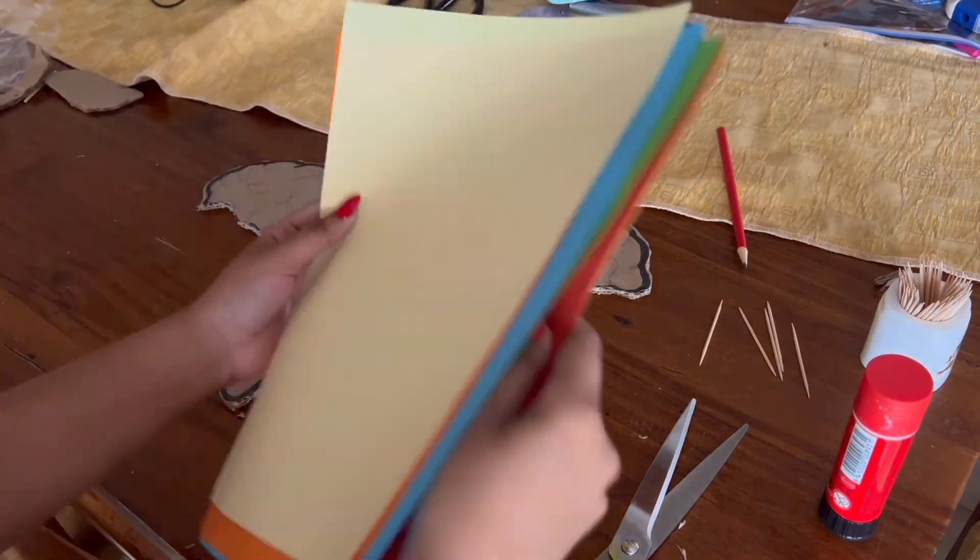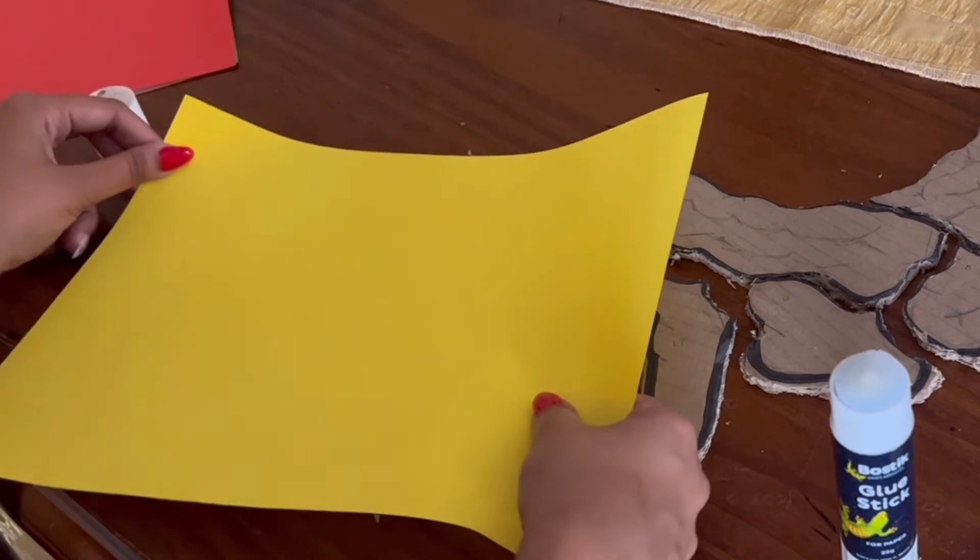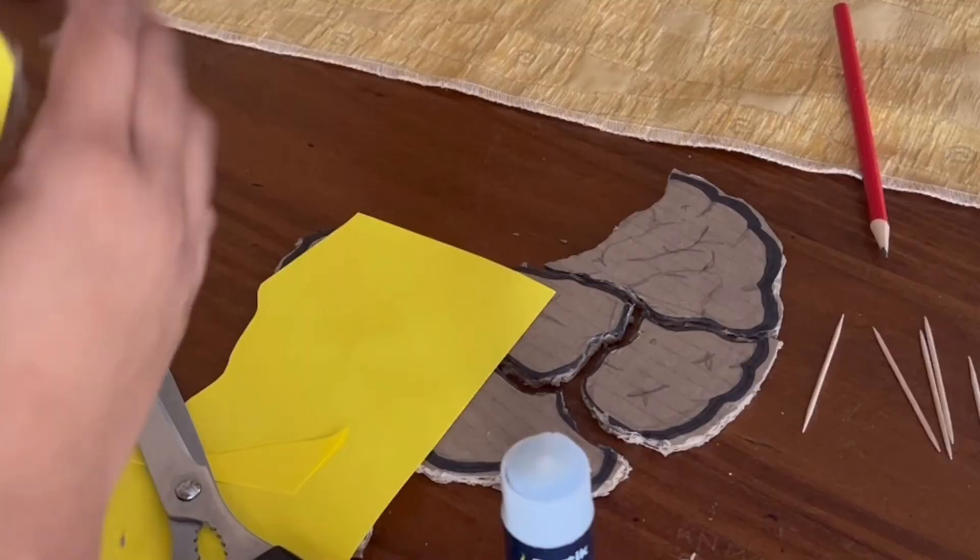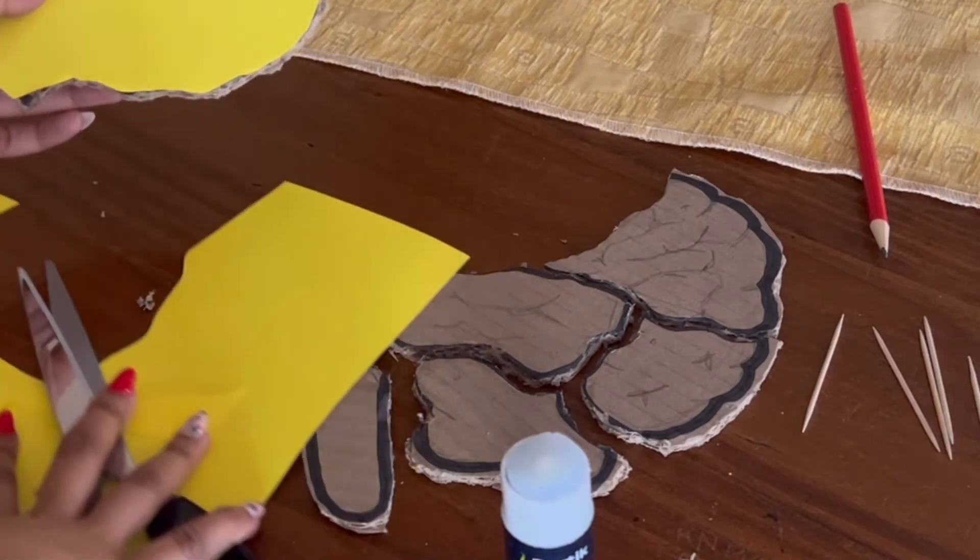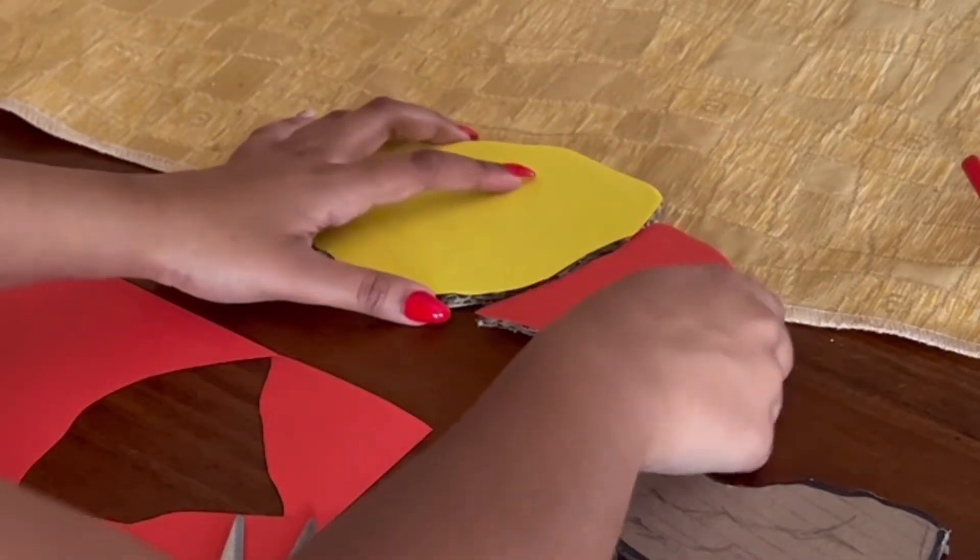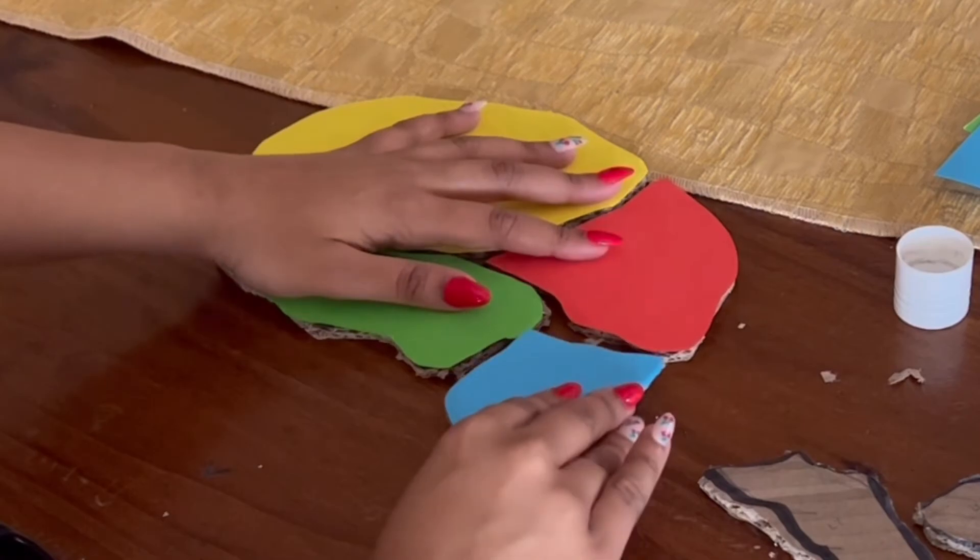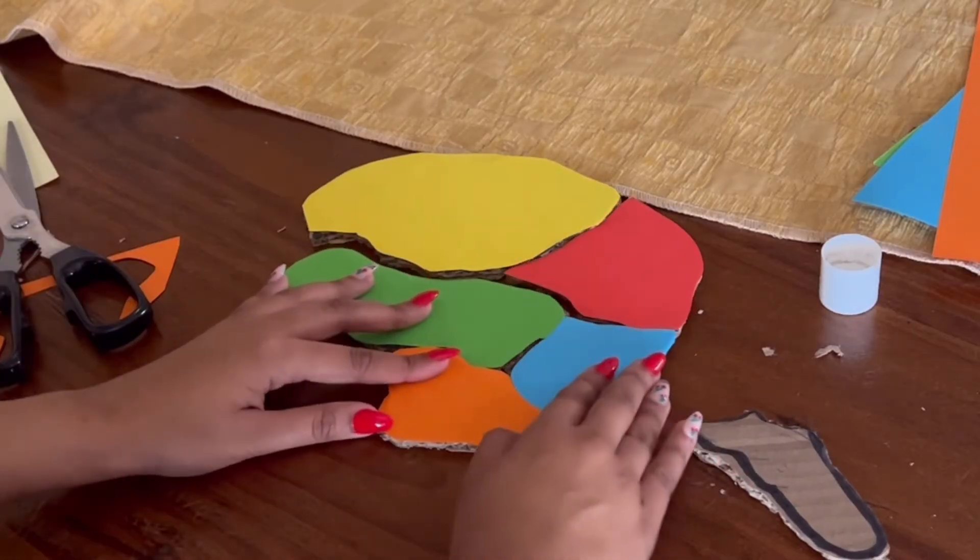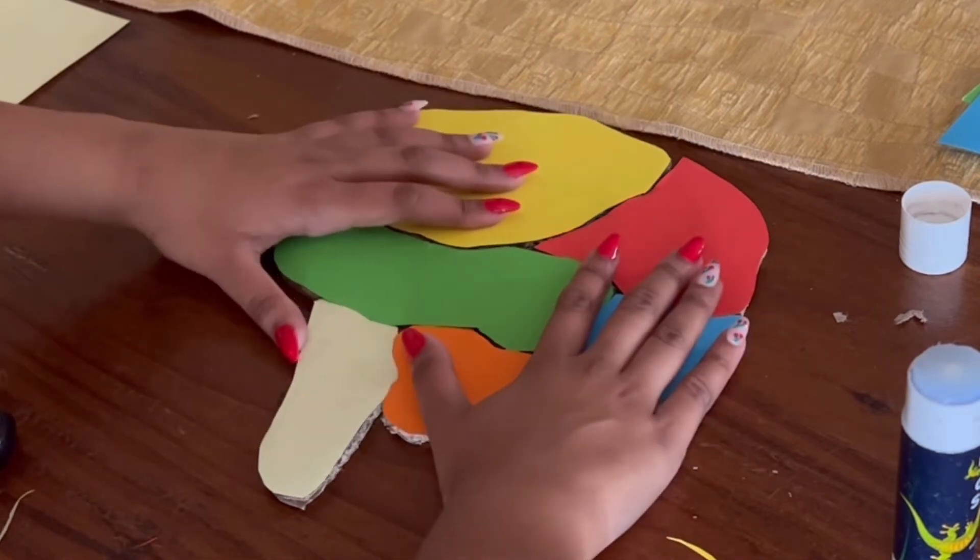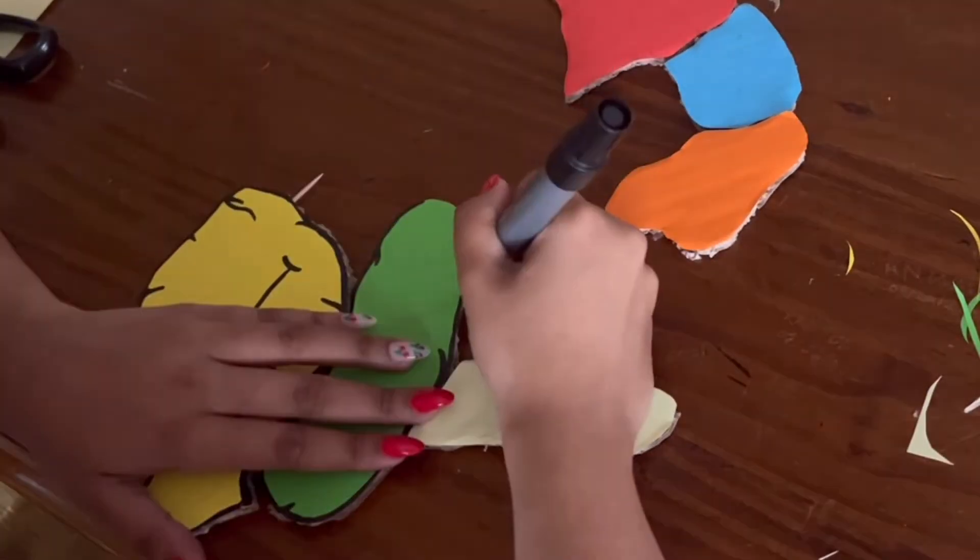Once the structure of the brain was complete, I then began to decorate the cardboard box model by using a variety of colored paper and stuck them on by using glue and cutting off the paper that remained. I then used a black marker to outline the model to give it more detail.